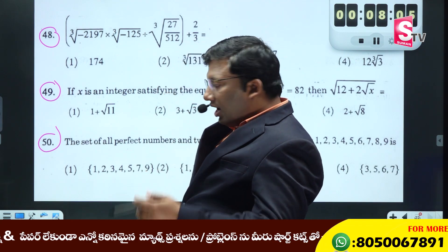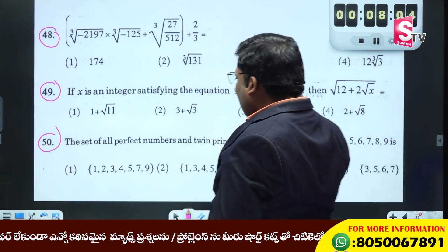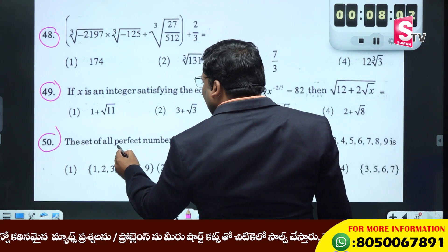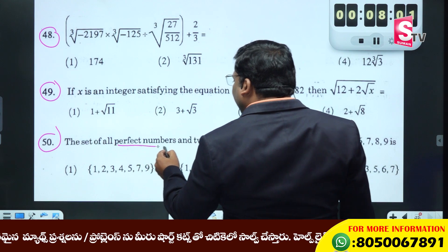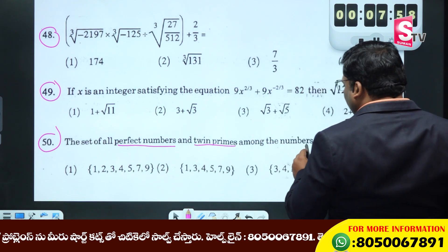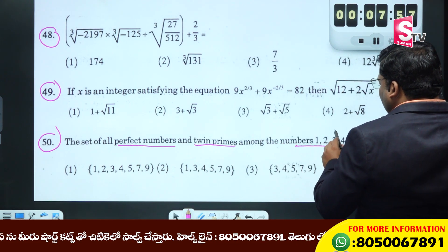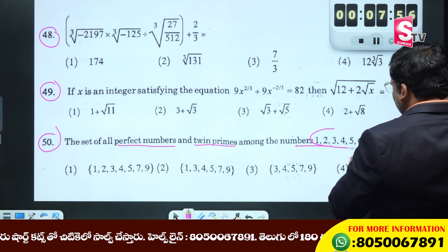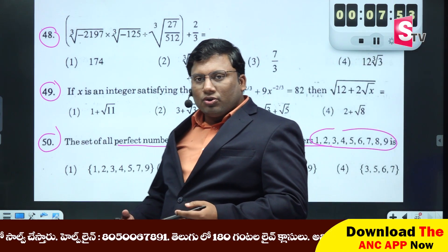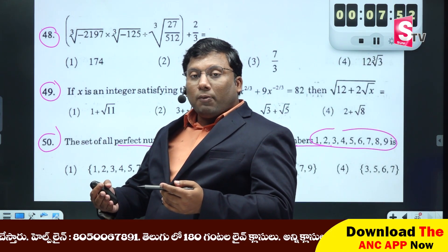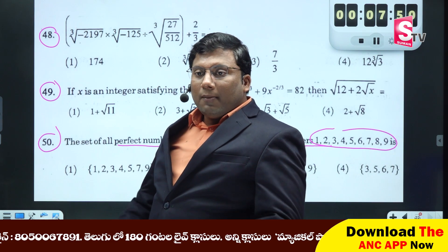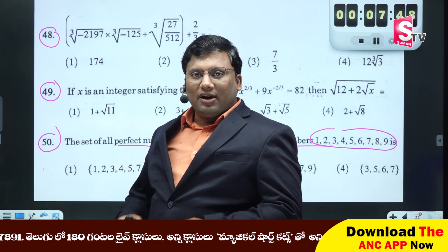I am going to start solving. The question is: find the set of all perfect numbers and twin prime numbers among the numbers. The first is 90 numbers — those 90 numbers should be perfect numbers plus twin prime numbers.